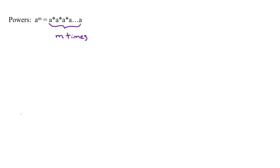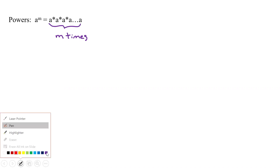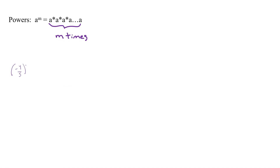Since we're dealing with fractions, let's take an example. Say we have negative four fifths and we want to square that. That just means we're going to take negative four over five times negative four over five. When you take a minus times a minus, we have a plus. So we just take four times four, we get 16, and five times five, we get 25. That's how you square it.